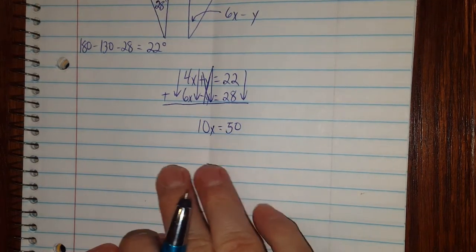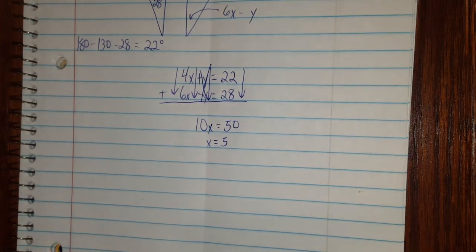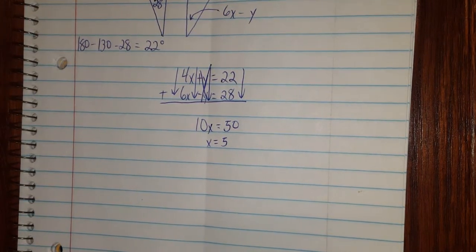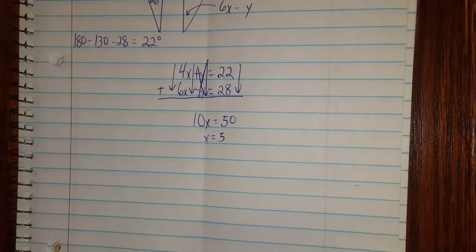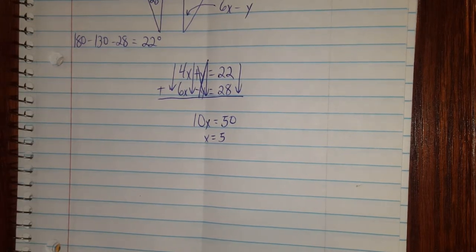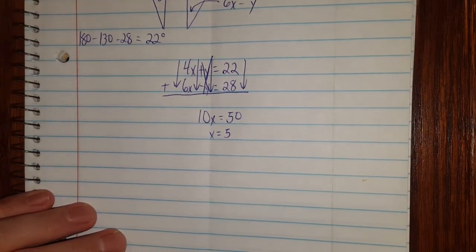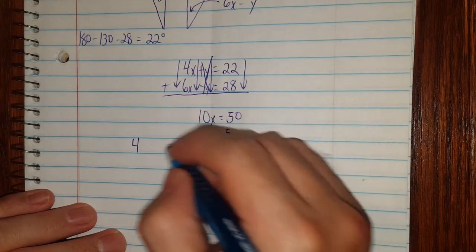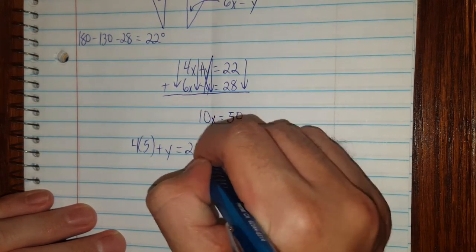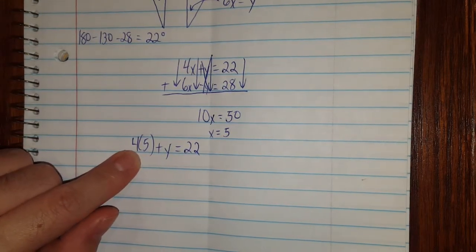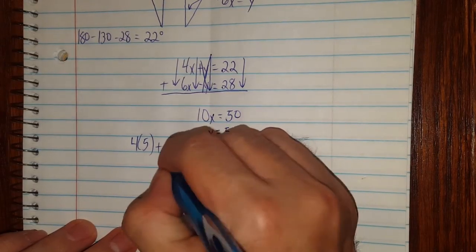So already I'm at this stage, and I get x equals 5. Then all you have to do is plug in this into either one. Doesn't matter. I'll probably use the top one, there's no negatives, but you can use the bottom one. No big deal if you want to do that. So here we go: 4 times 5 plus y equals 22. And when it's all said and done, this is 20. And when I subtract 20 from both sides, I get y equals 2.